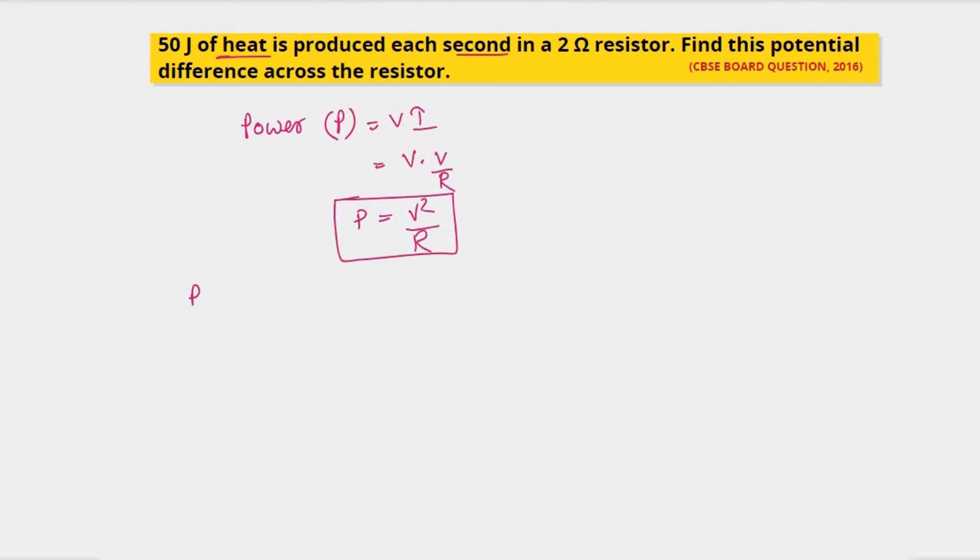We have power is 50 watt and the resistance is given as 2 ohm. Substituting these values in this equation, we write V squared would be power into the resistance. So power here is 50, resistance is 2, so it is 100. V is under root of 100, which is 10 volt.